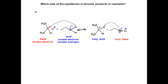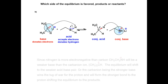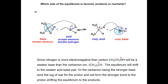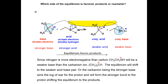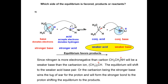Now that you have identified the acids and bases on both sides of the equilibrium, determine the relative base strength. Since nitrogen is more electronegative than carbon, the amide ion will be a weaker base than the carbanion. The equilibrium will shift to the weaker acid-base pair, the products. Or the carbanion, being the stronger base, wins the tug of war for the proton and will form the stronger bond to the hydrogen, shifting the equilibrium to the products.